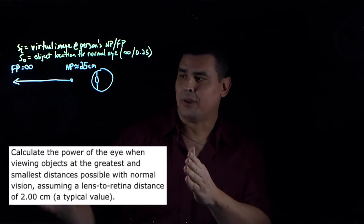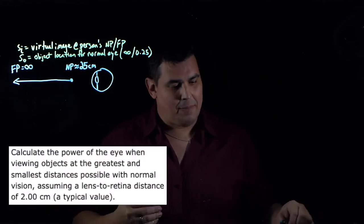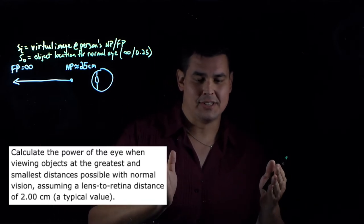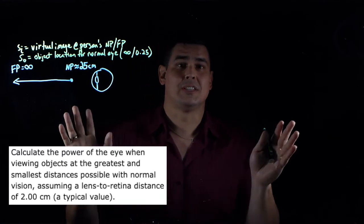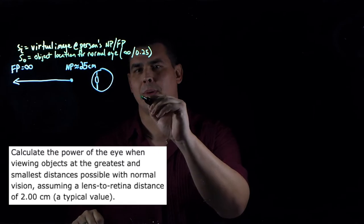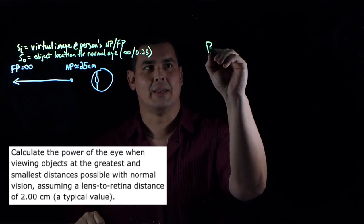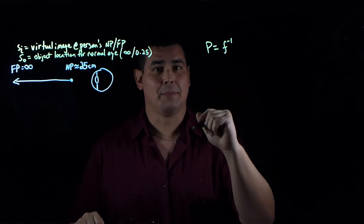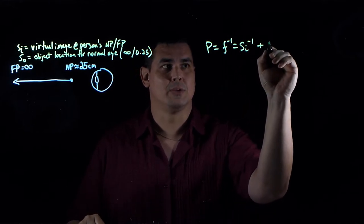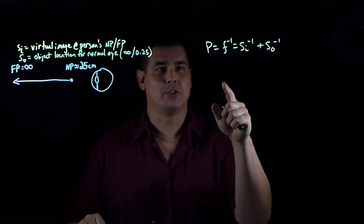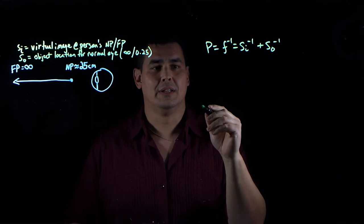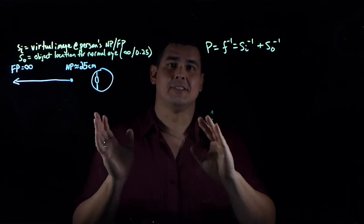Here's the first problem: calculate the power of a normal eye at the greatest distance and the closest distance that you can see. We use our power equation — power is the reciprocal of the focal length, which equals SI to the minus one plus SO to the minus one. When we use power, we're basically skipping calculating focal length. Let's solve for both the greatest and least distances.